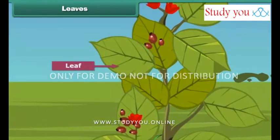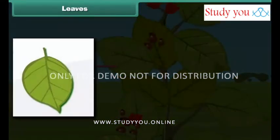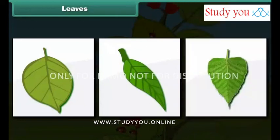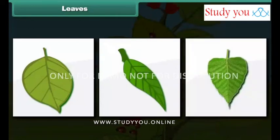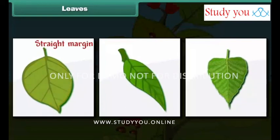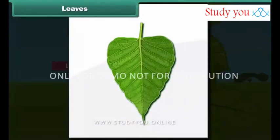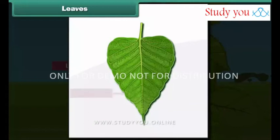The next part of the plant is the leaf. It is a green part born on the stem. Leaves are of different shapes — some are round, some are long, and some are triangular. The surface edge of a leaf is known as its margin, and margins also differ: some have straight margins while some have uneven margins. The flat part of the leaf is called the leaf blade, and each leaf blade has a main vein and many small veins connected to it.